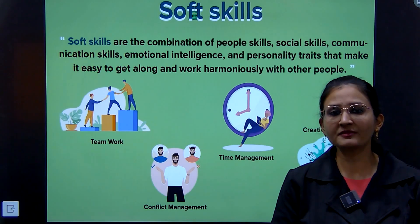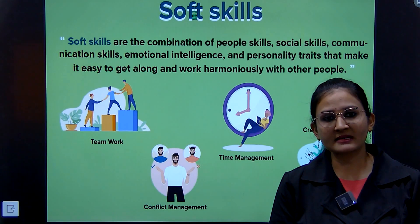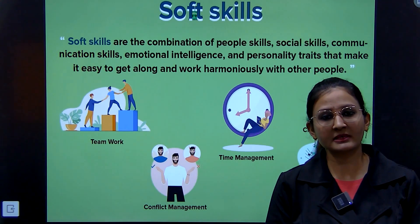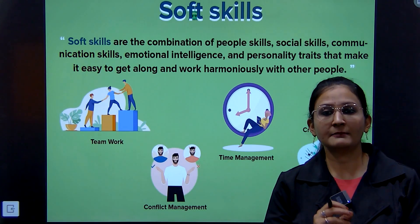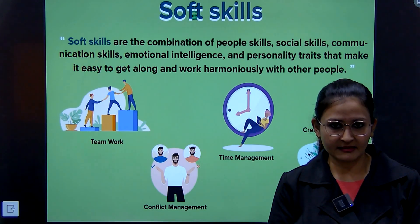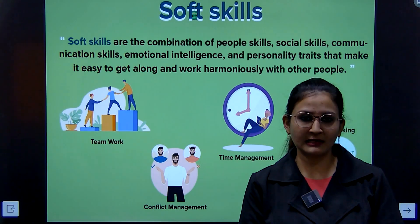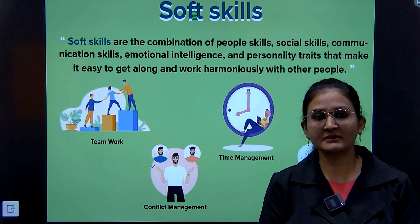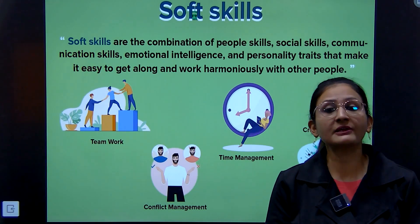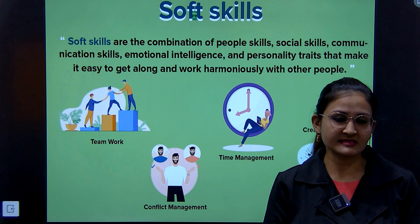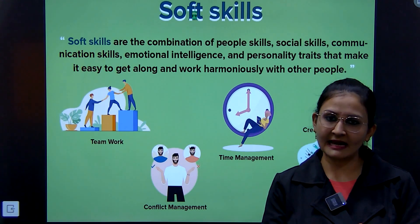In soft skills, you have to work with other people politely. For example, teamwork means you have to work with your team members in mutual understanding. Time management and creative thinking are also key. Conflict management means that in the place where you are working, disputes and conflicts may arise, but you have to resolve those conflicts and manage all things smoothly and properly.